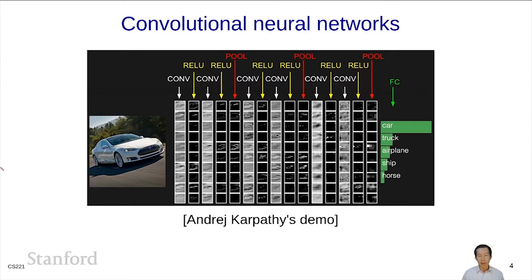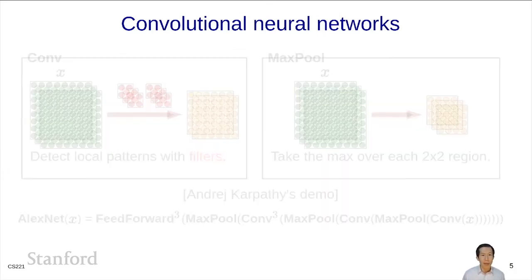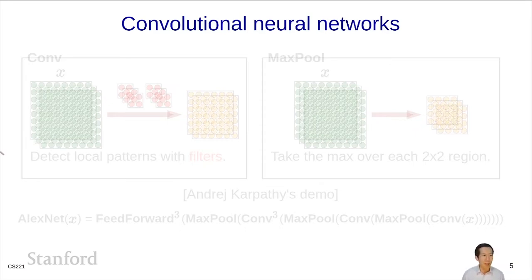ConvNets are introduced here for 2D images, but they can also be applied to text or sequences, which are 1D, or videos. ConvNets have two basic building blocks. I'm not going to go through all the details — you can take CS231n if you want to learn everything about ConvNets. Instead, I'm going to focus on the interface and show how these modules can work.